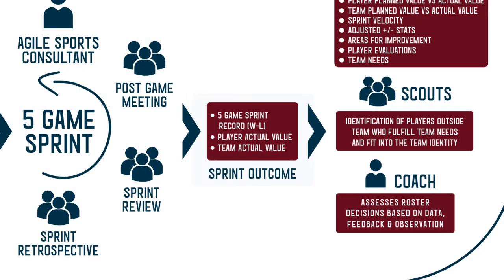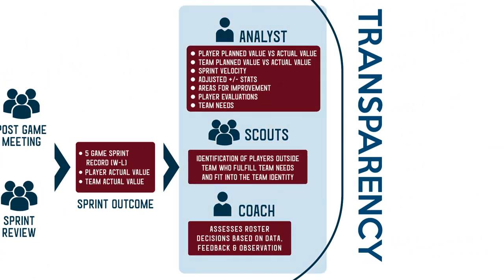At the end of each sprint, the results of the games — wins and losses, the actual team value, and actual player values during the sprint — become the sprint outcome. The sprint outcome also becomes an input for the lead analyst, scouts, and architect to identify players around the league, internationally, or at the college or high school level that fit the team identity and needs and can add value. It also allows the coaching staff to see where adjustments will need to be made in the next sprint.